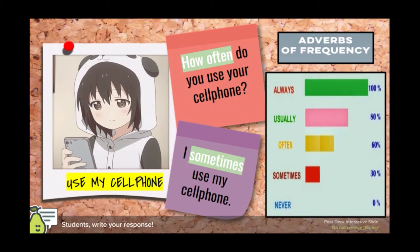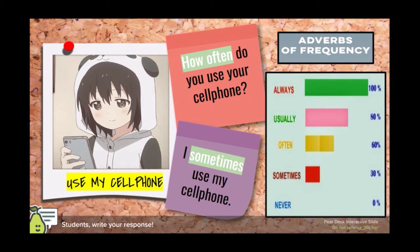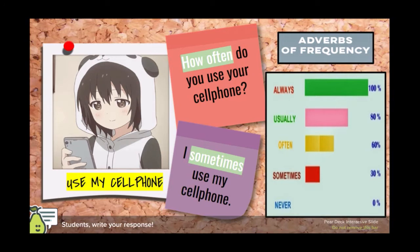How often do you use your cell phone? I sometimes use my cell phone. These are the adverbs of frequency. They indicate the frequency we do an activity. When I do an activity 100% of the time, it means I always do this activity. When I do an activity 80% of the time, it means I usually do an activity. When I do an activity 60% of the time, it means I often do an activity.